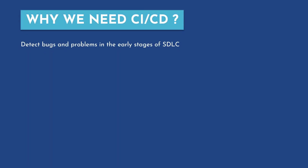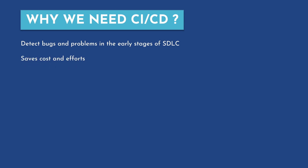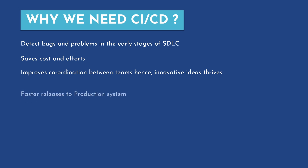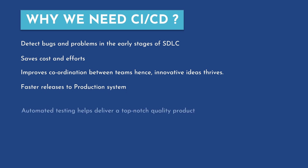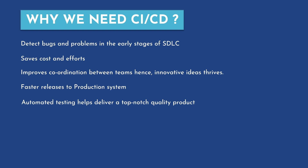Let's have a look at why we actually need CI/CD. It helps to detect bugs and problems in the early stages of the SDLC, saving a lot of cost and effort. It improves coordination between different teams, so innovative ideas thrive. It enables faster releases to the production system. Automated testing helps deliver a top-notch quality product, and with minimum human intervention there are fewer chances of manual errors because everything is automated.